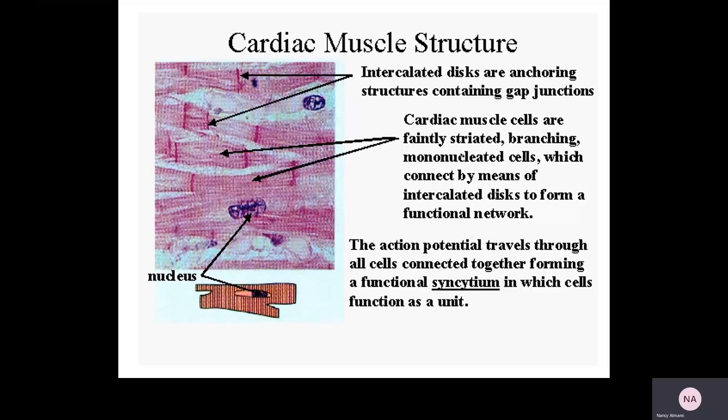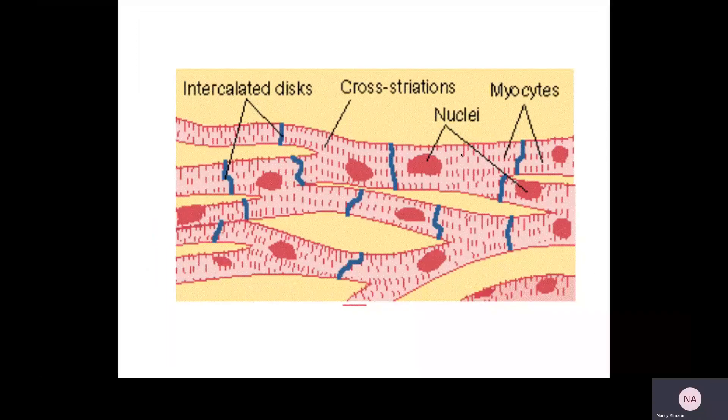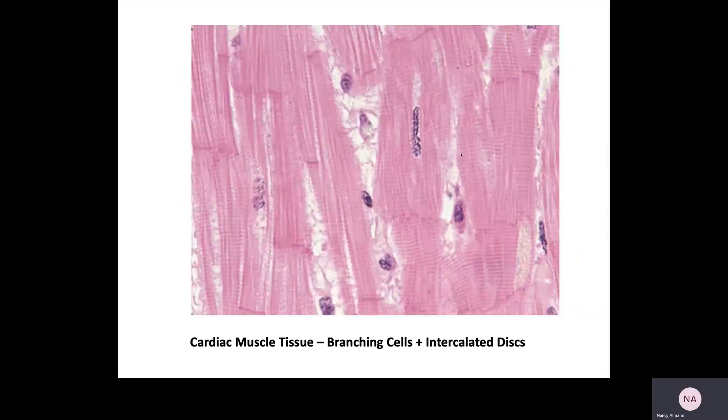The fact that intercalated disks aid with structure and intercellular communication is another reason why the heart is able to act like a functional syncytium. So the characteristics of cardiac muscle cells: involuntary, striated, branching cells, single nucleus (mononucleated), and intercalated disks between the cells. Images show a drawing and a micrograph where you can clearly see the intercalated disks, some branching, striations, and single nuclei.